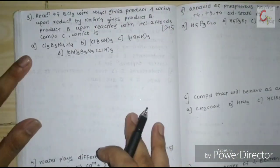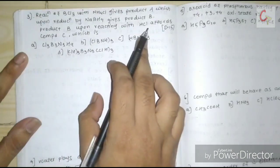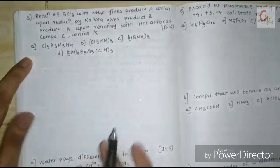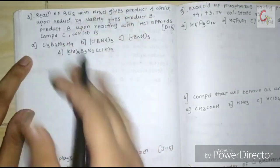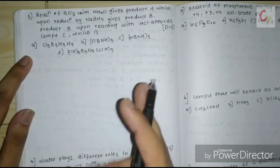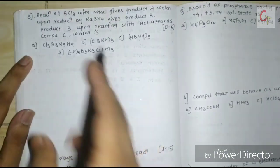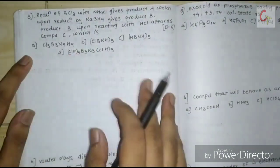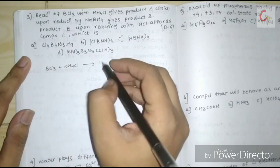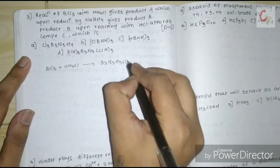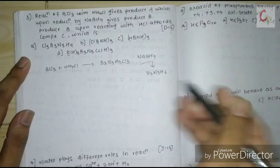The next question: BCl3 reacts with ammonium chloride to give product A, which upon reduction by NaBH4 gives product B, and product B reacts with HCl to give compound C — predict the structure or molecular formula of C. This is a borazine reaction. BCl3 reacts with NH4Cl to give trichloroborazine (B3N3H3Cl3), which on reduction with NaBH4 gives borazine (B3N3H6).